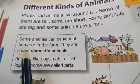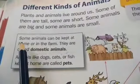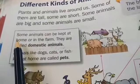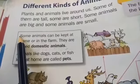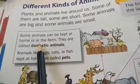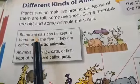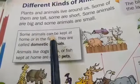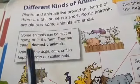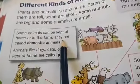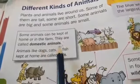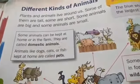You have to write in your EVS classwork three times: Some animals can be kept at home or in the farm. They are called domestic animals. Example: dog, cat, fish, etc.